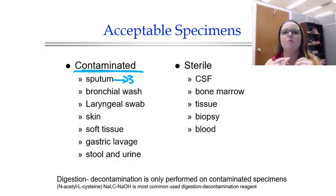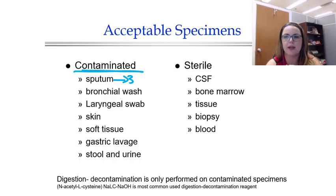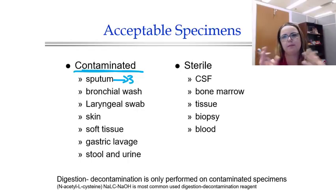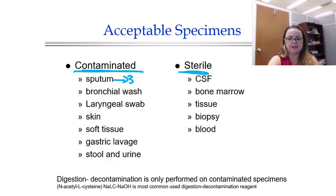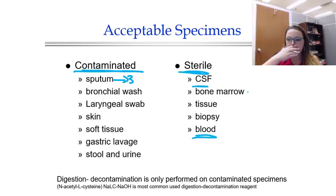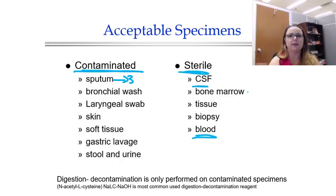You're also going to need to get rid of any components that might grow faster than TB, because remember it's a really slow-growing organism. There are several sterile body sites — cerebrospinal fluid, bone marrow, blood — and if you're able to grow out TB from these, it would likely be the first thing to grow because these sites are sterile. So these you wouldn't need to decontaminate, but contaminated sources you would.